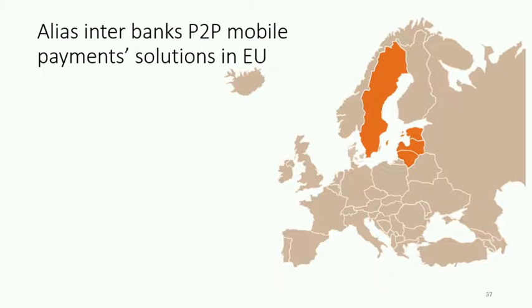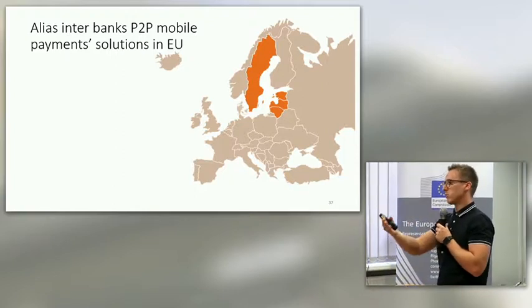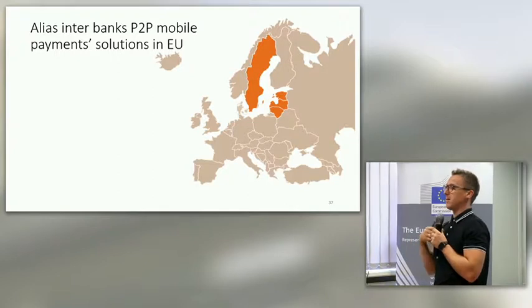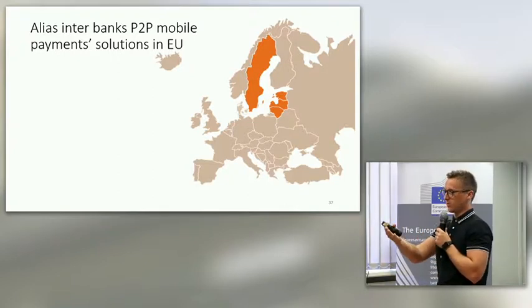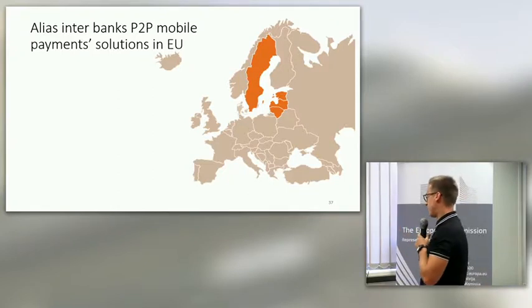Alias — just to explain in short — it's an alternative attribute for IBAN, a bank account, mapped to something like a phone number, social network, or email, whatever is agreed. So as a money sender, I just need to know the beneficiary's phone number, for example, and sending money is very easy and very fast.